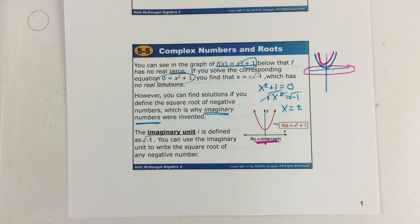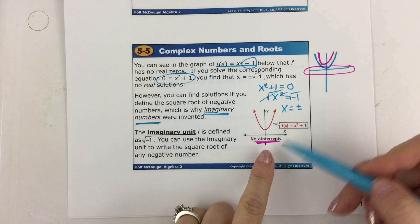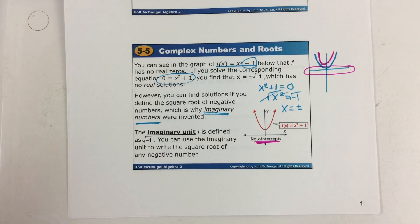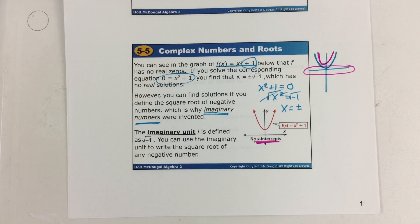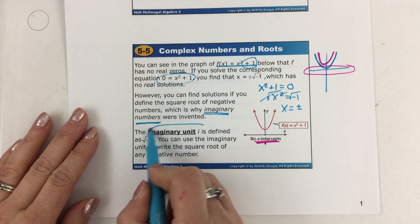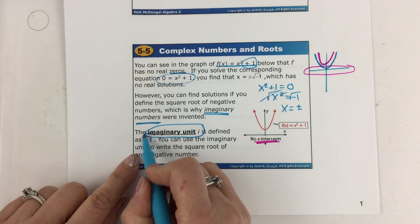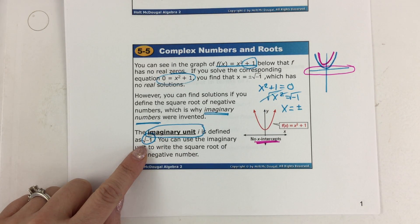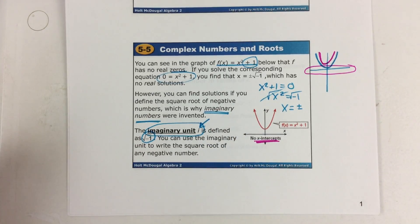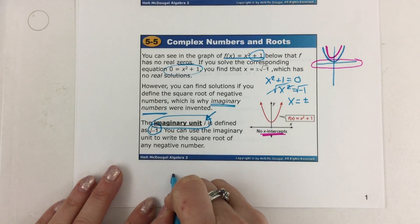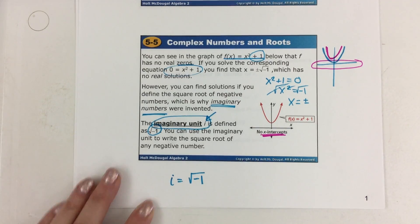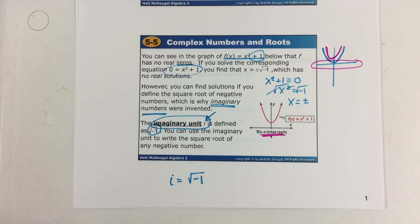So somewhere along the way, some mathematician experienced this — they were working on a problem and things weren't working because there was no real solution. Just like you and I can be stubborn, this individual must have been really stubborn and said, I'm going to get an answer no matter what. So they created the imaginary unit. What you can do is change the square root of negative 1 into i — meaning it's imaginary, it's not real — but then you can go forward and actually solve the problem. So i, the imaginary unit, by definition, is the square root of negative 1.